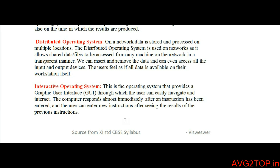With the distributed operating system, you have rights to share data and also rights to transfer data transparently. It works only with network connections. If the user feels that data is available on their network workstation, the OS avoids duplication of files or data — a file stored in one location can be accessed by all other computers. This is the main purpose of the distributed operating system.